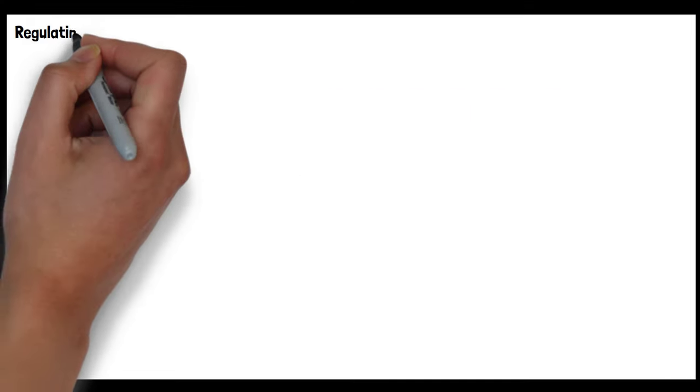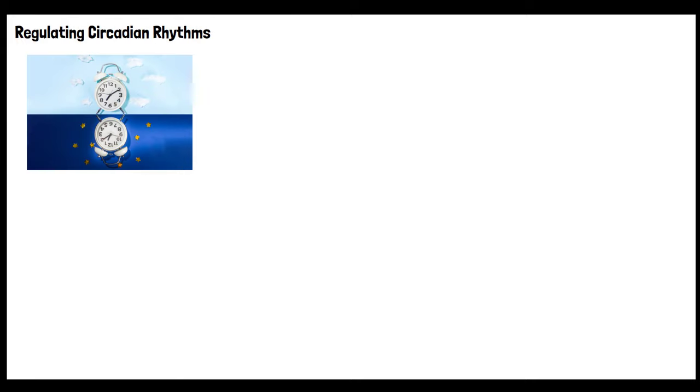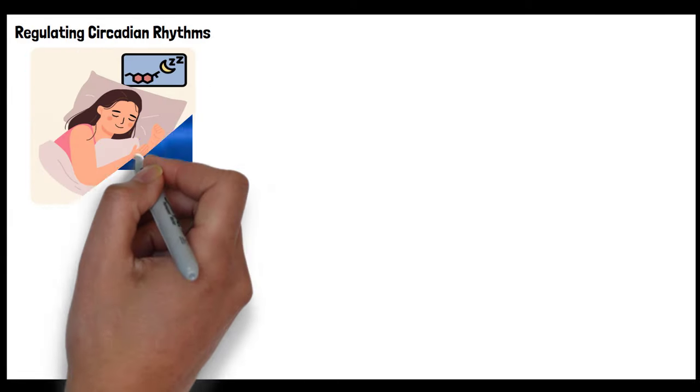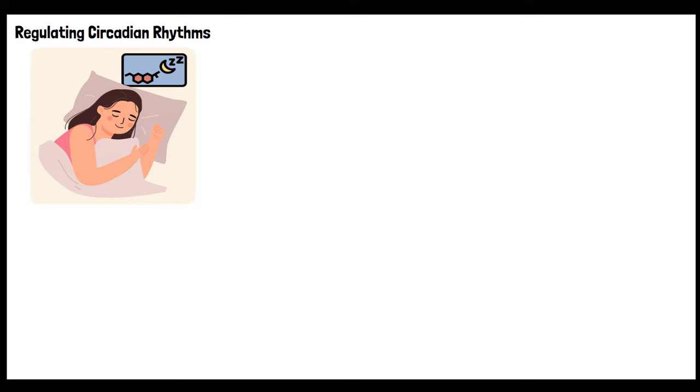Here's a detailed look at why a consistent sleep schedule can be beneficial. Regulating circadian rhythms: your body has an internal circadian rhythm that regulates various physiological processes, including sleep-wake cycles. Consistency helps to set this internal clock, making it easier to fall asleep and wake up. The hormones that help regulate sleep, such as melatonin, are released according to this circadian rhythm.